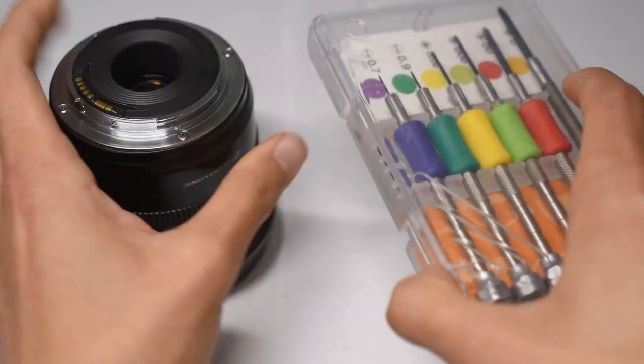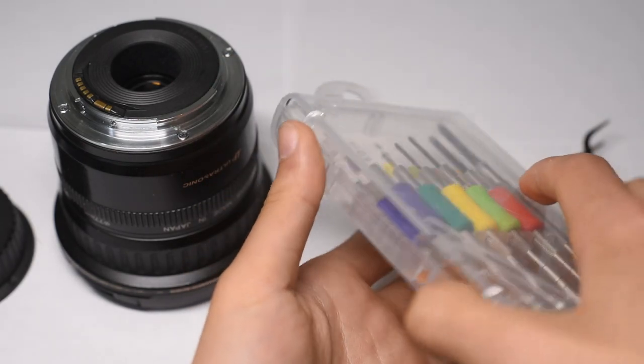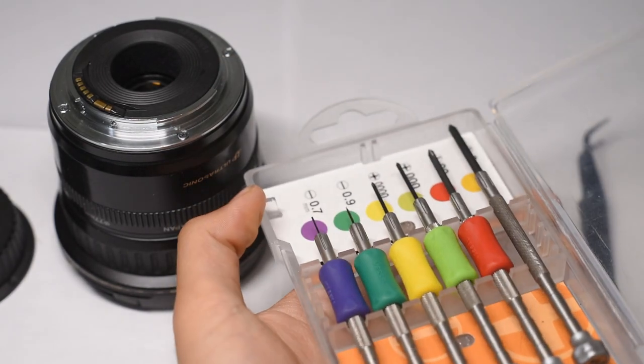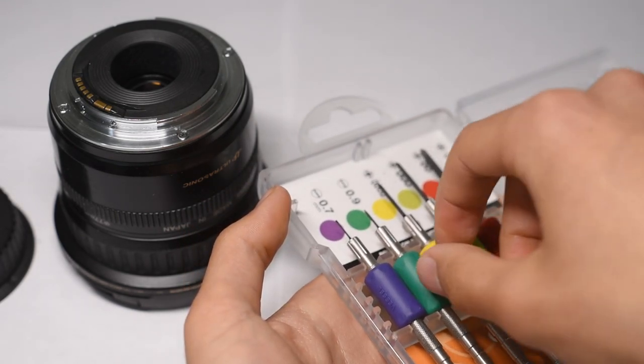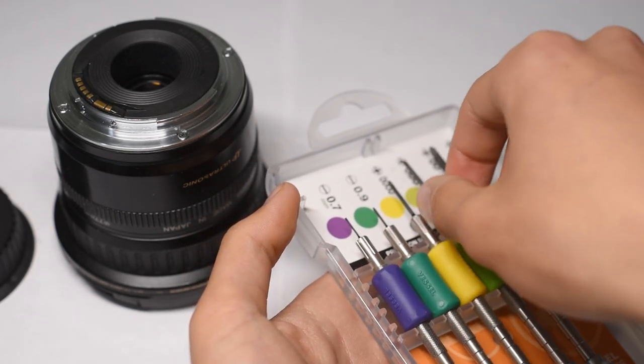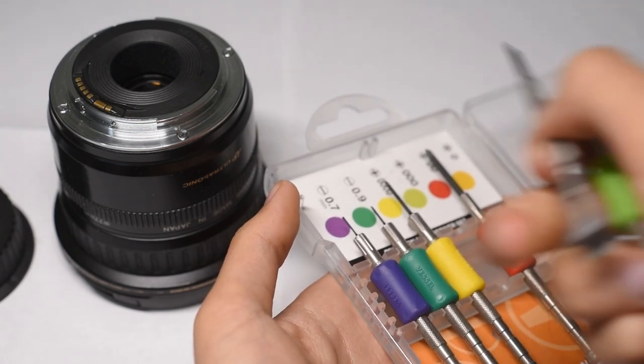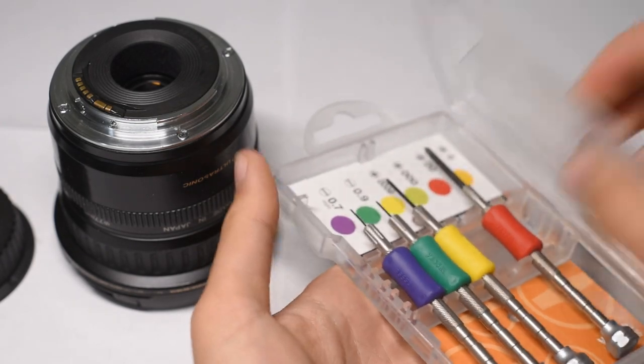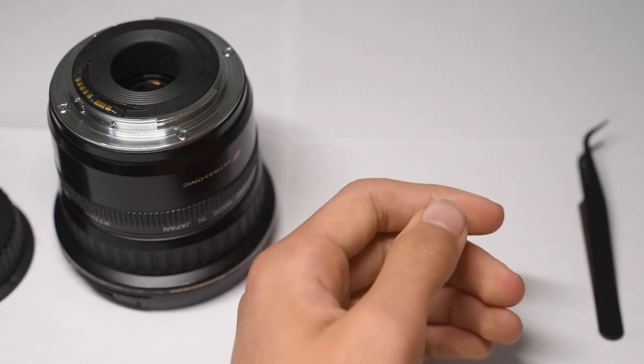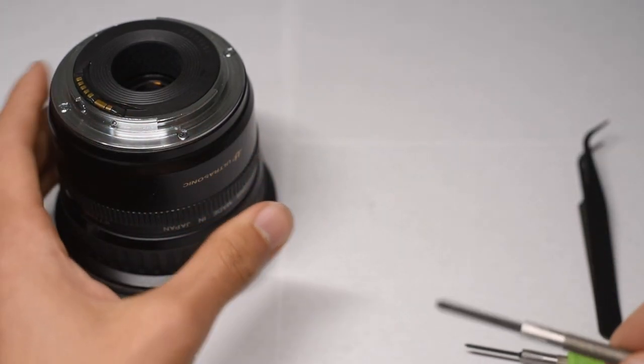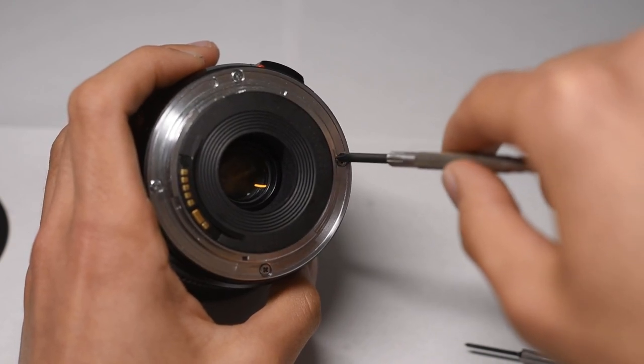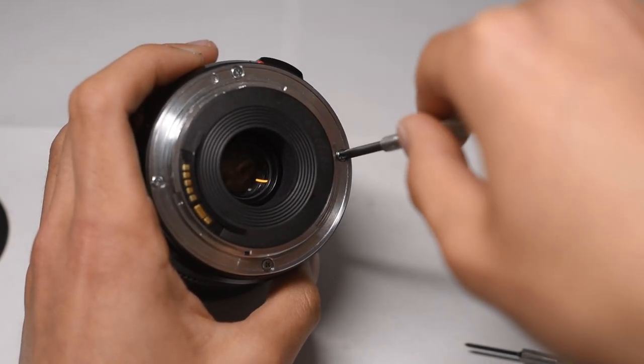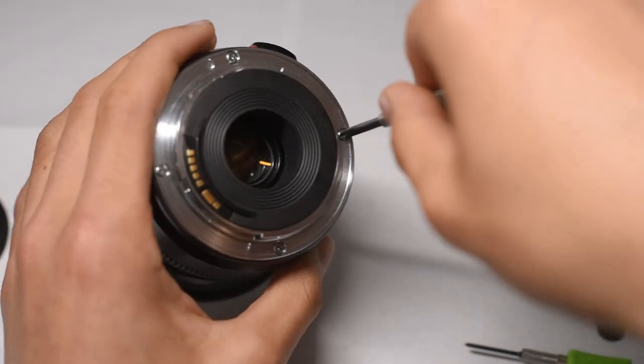You want to preferably use a set of JIS screwdrivers. You can buy them for like $10 on eBay or Amazon. You don't want to strip these screws because they're important. So just be careful when you're opening them for the first time. They may be tight, so just be careful.